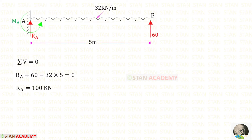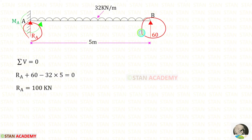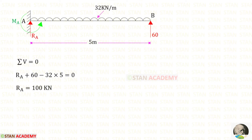Now let us apply the rule ΣV = 0 to find Ra. Ra and Rb are acting upwards, so both are positive. The uniformly distributed load is acting downwards, so it is negative. We multiply the UDL by the span distance. Finally, we get Ra = 100 kN.